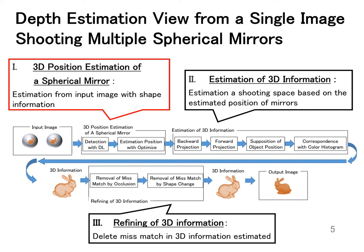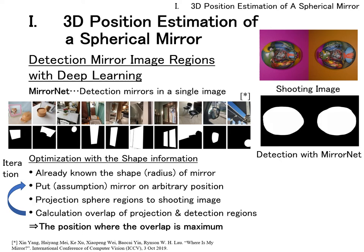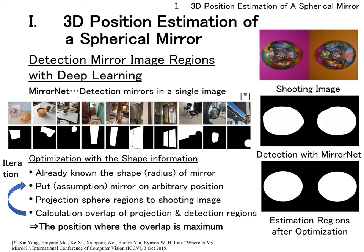I will now explain how we estimated the 3D position of the spherical mirror. To estimate the 3D position of the spherical mirror, we used deep learning. MirrorNet is a network for detecting the mirror image region from a single image. We used a pre-trained model in this paper. For the detected mirror image region, we estimated the 3D information by optimizing based on the shape information of the spherical mirror.